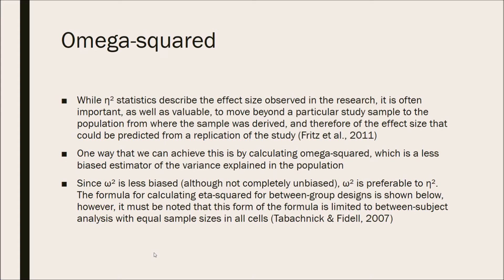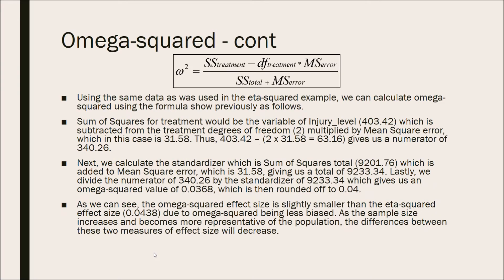The formula for calculating omega squared for between-group designs is shown here. It must be noted that this form of the formula is limited to between-subject analysis with equal sample sizes in all cells. The formula is: sum of squares treatment minus the degrees of freedom of that treatment times the mean square error, divided by the sum of squares total plus the mean square error.